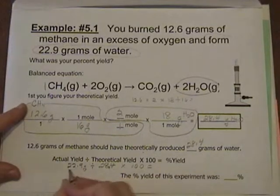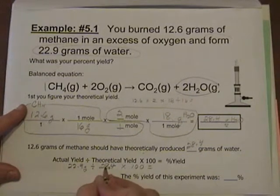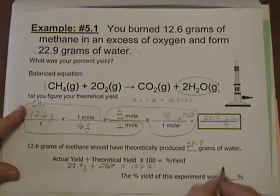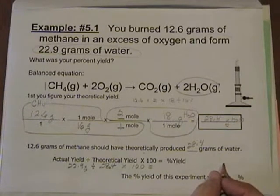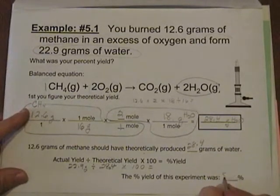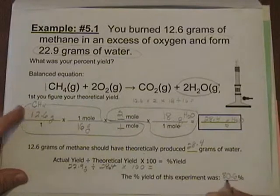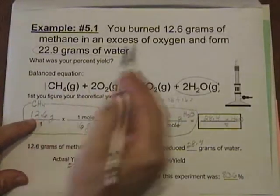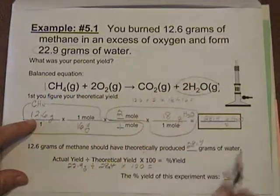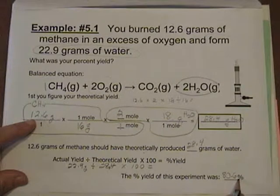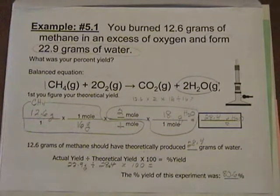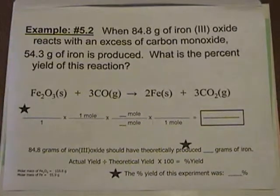Then we multiply that times 100 to get our percent yield. Punching that into the calculator, 22.9 divided by 28.4 times 100, and the answer was 80.6. Because I had 3 sig figs up here in both locations, I would keep 3 sig figs in my percent.